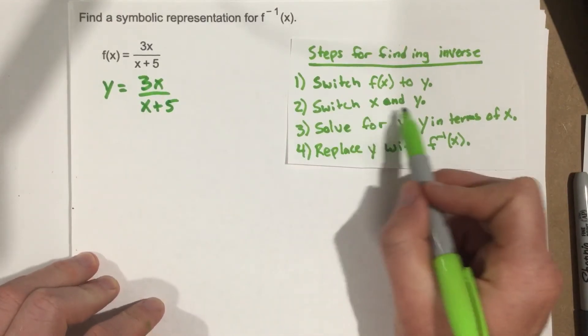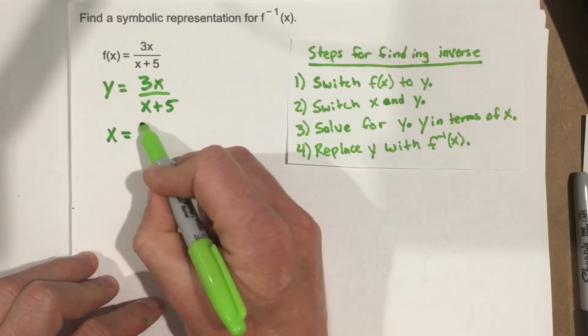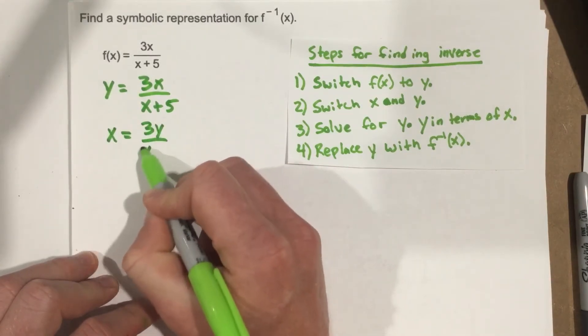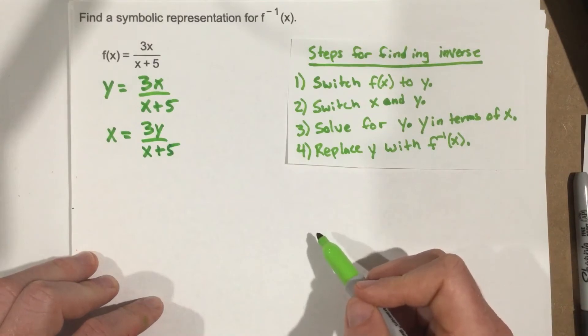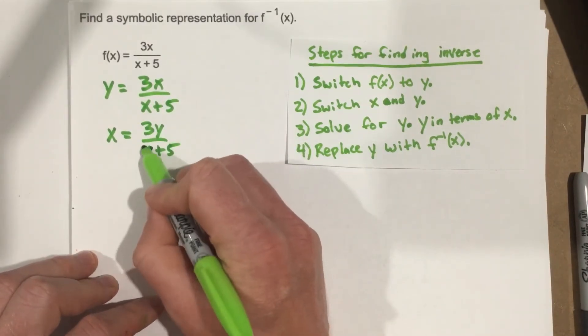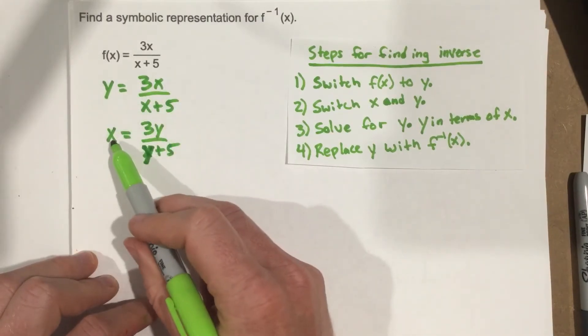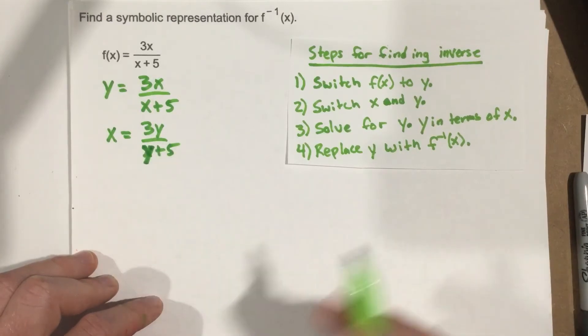And now we're going to switch x and y. So x and y switch. We get x equals 3y over x plus 5. Oops. 3y. I forgot to make this y. This should be y as well. So x and y switch, I get x equals 3y over y plus 5. All right.